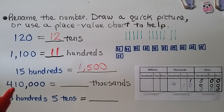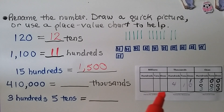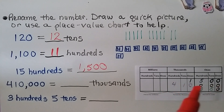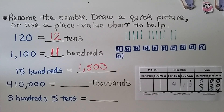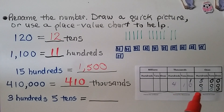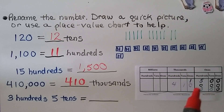Now we have 410,000. We need to know how many thousands that would be. Using our place value chart, we write 4, 1, 0 and fill in the remaining zeros. The thousands placemark shows we can group those three digits together and say we have 410 thousands. Next, with 3 hundreds and 5 tens, we write 3 in the hundreds place and 5 in the tens place. Grouping them together gives us 35 tens, which can also be renamed as 350.